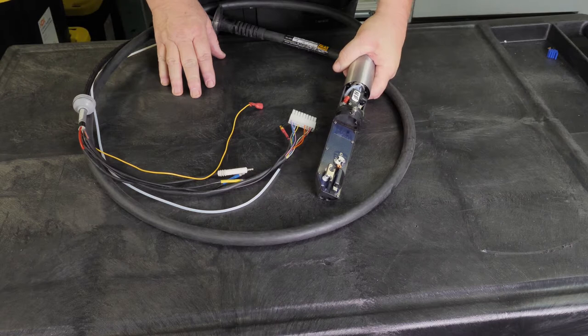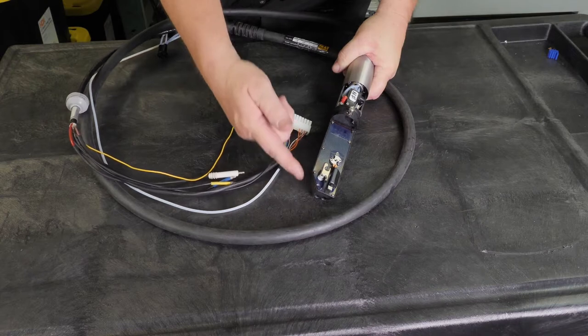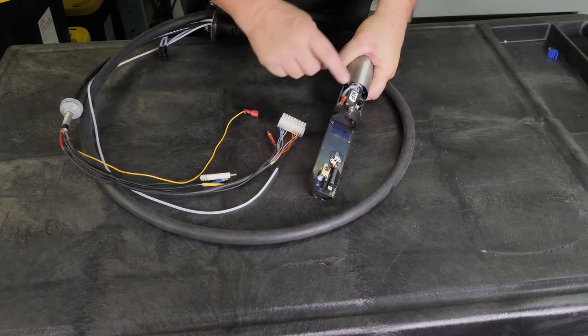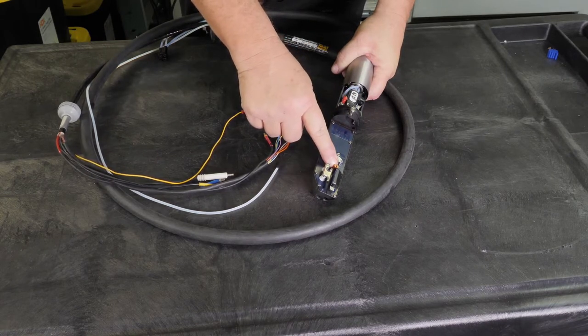When you send in your non-working print head to our shop, our technicians first evaluate why the print head is not working. Some of the issues that occur involve the temp sensor, the valve action, an issue with the strobe, or the print head is not sensing the print head cover as it should.